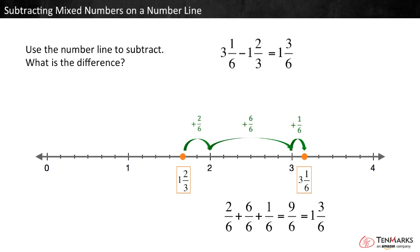So, 3 and 1 sixths minus 1 and 2 thirds equals 1 and 3 sixths. In this video, you have learned to subtract mixed numbers on a number line. Thanks for watching.